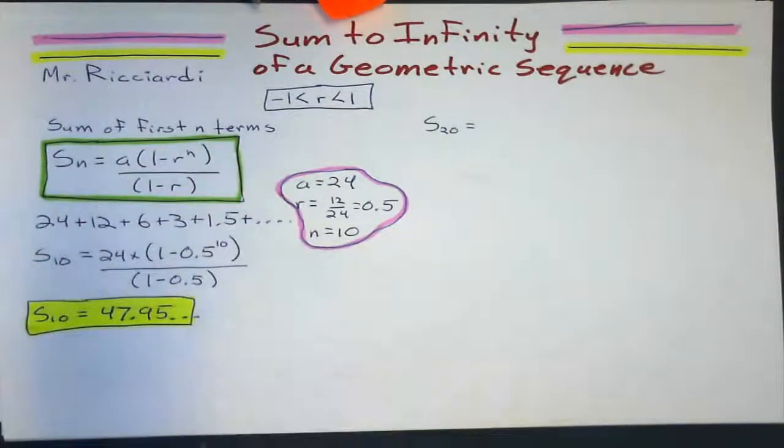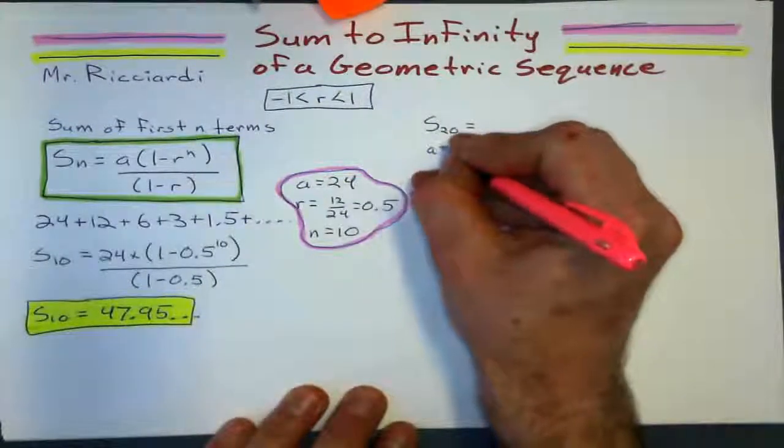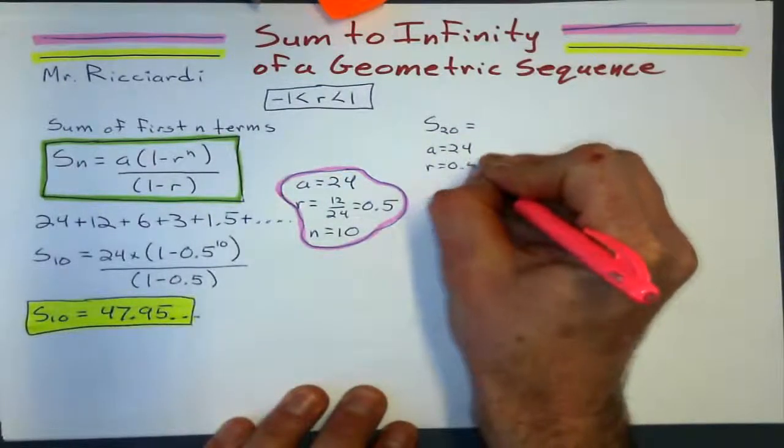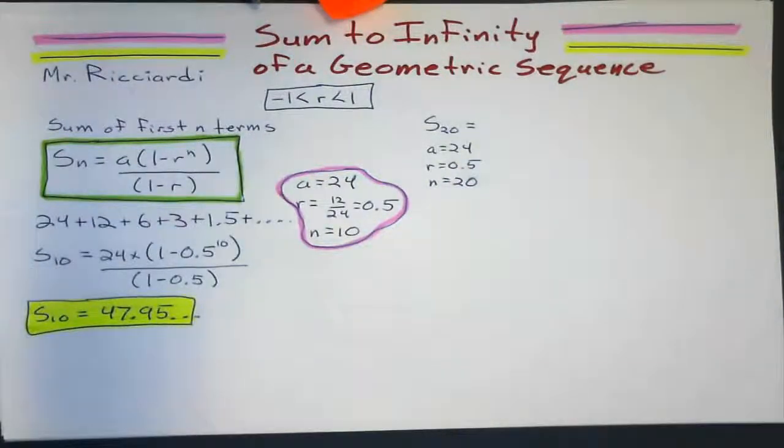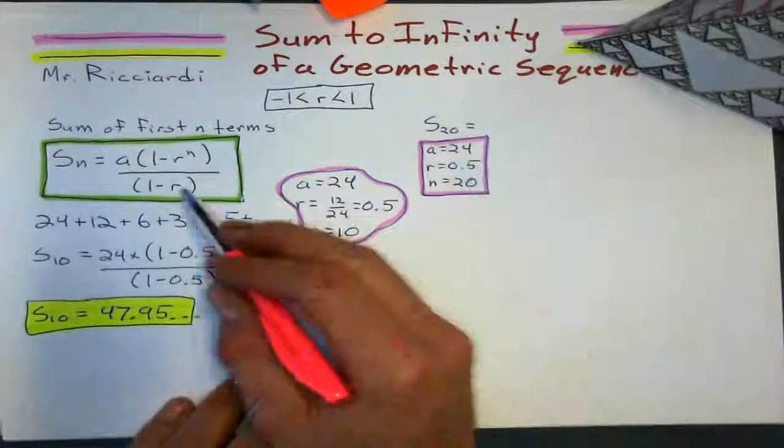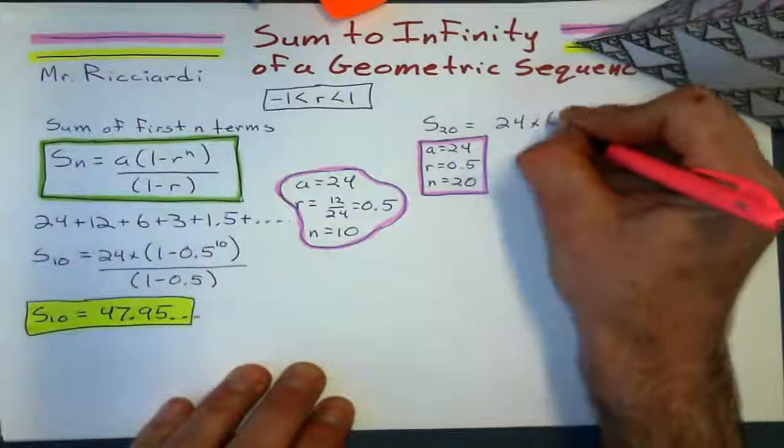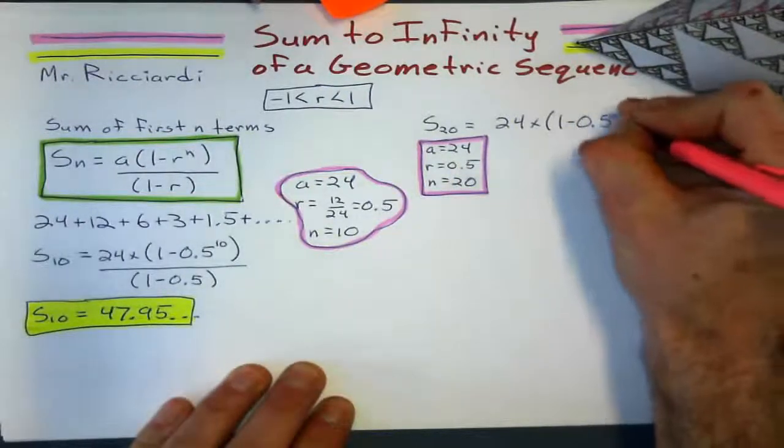What's that going to give me? If I add up the first 20 terms of that sequence, what do I get there? Everything's the same. A is still 24. R is still 0.5. But N is going to be 20.